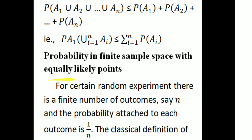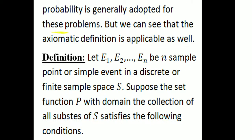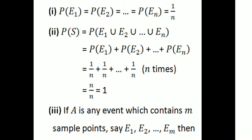We will now discuss probability in a finite sample space with equally likely points. For certain random experiments, there is a finite number of outcomes n, and the probability attached to each outcome is 1 by n. The classical definition of probability is generally adopted for these problems, but the axiomatic definition is applicable as well. If E1, E2, etc., En are sample points, then probability of E1 equals probability of E2 equals... equals 1 by n.